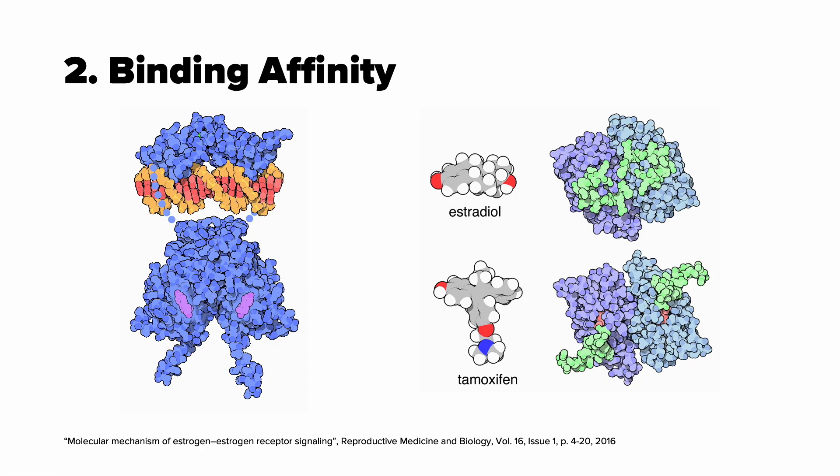Binding affinity is the strength of the binding interaction between a biomolecule, estradiol or tamoxifen, and estrogen receptor. Binding affinity is typically measured and reported by the equilibrium inhibition constant or KI, which is used to evaluate and rank the strength of biomolecule. So the smaller this KI is, the greater the binding affinity of the ligand to its target. It means the stronger estradiol or tamoxifen is connected to this receptor.